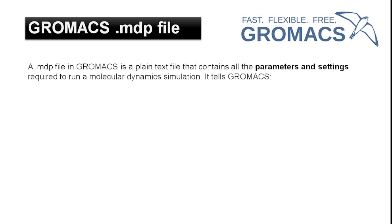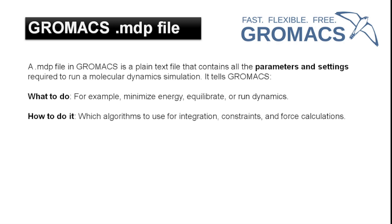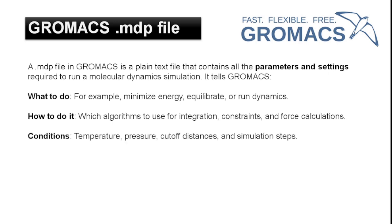What is a .mdp file? It's a plain text file that contains all parameters and settings required to run a molecular dynamics simulation. It tells GROMACS what to do — whether minimization, equilibration, or production run — and how to do it: what kind of algorithm will be used for integration, for periodic boundary condition, or for force calculation. Different conditions like temperature, pressure, cutoff distance, and simulation steps can all be set up using the .mdp file.